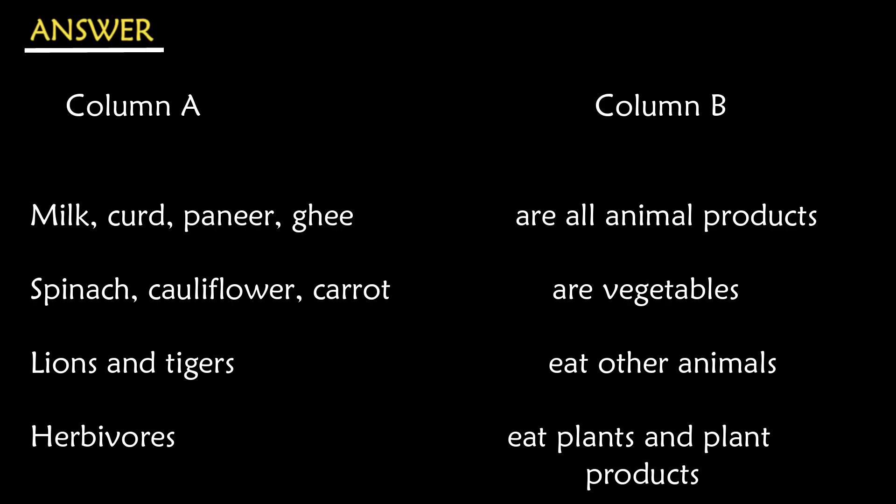The correct answers are: 1. Milk, curd, paneer, ghee — are all animal products. 2. Spinach, cauliflower, carrot — are all vegetables. 3. Lions and tigers — eat other animals. 4. Herbivorous — eat plants and plant products.